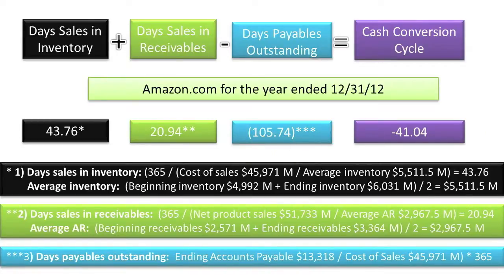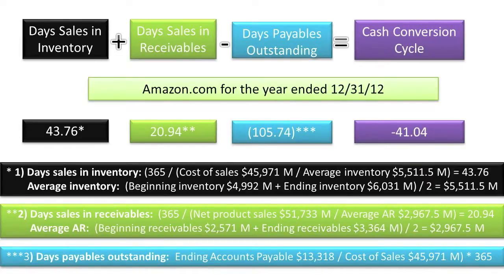In addition, due to Amazon's negative Cash Conversion Cycle, it has an extra 41.04 days to use billions of dollars of interest-free cash for other things — cash that would have normally been tied up in inventory or in receivables.